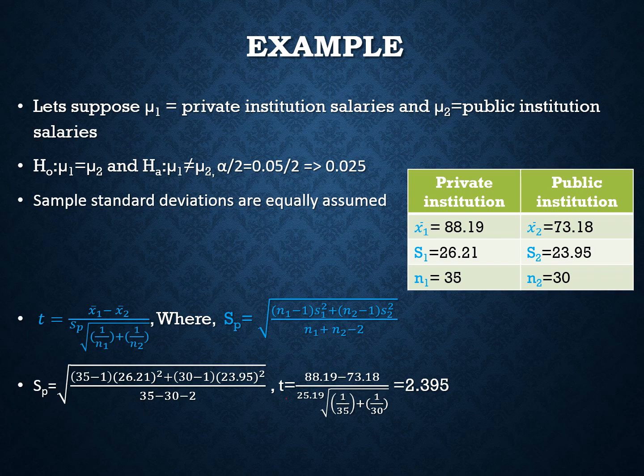The null hypothesis is mu1 equals mu2. Since the question asks whether mean salaries differ between both institutions, we use an inequality sign — so the alternative hypothesis is mu1 not equal to mu2. Since it is a two-tail test, we divide alpha by 2: 0.05 divided by 2 equals 0.025.